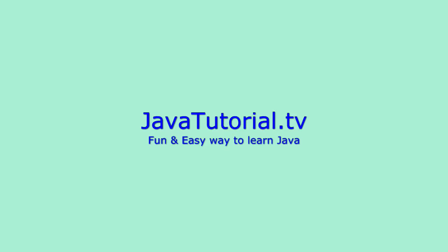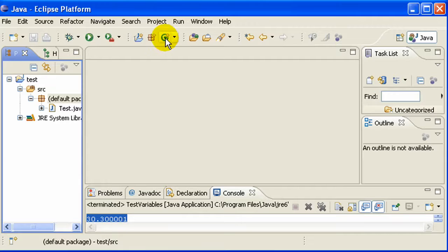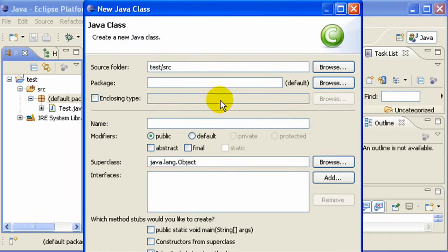Hello, welcome to another Java tutorial. Today we are going to discuss about variable declaration. You can define variables in two ways: one is data type and name, and the other one is data type, name, and you assign a value. Let's get started with some programs.